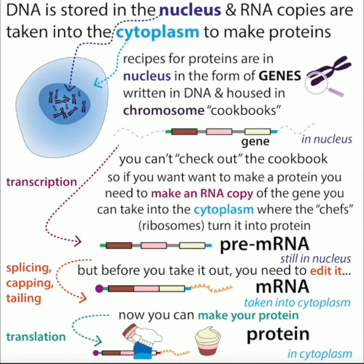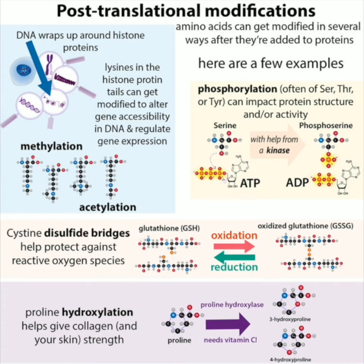Proteins are like the workhorses of your cells — there are all sorts of proteins that can do all sorts of different things. The recipes for making all of them are written in DNA in the form of genes. RNA copies of those, called messenger RNAs, are then used by protein-making complexes called ribosomes to make the protein in a process called translation. Translation gives you the product exactly as written in that recipe, but that might not be the end of the story. There are changes that can be made to a protein not specified in the genetic recipe, and we call these post-translational modifications because they happen after translation. Probably the best example is something called phosphorylation.